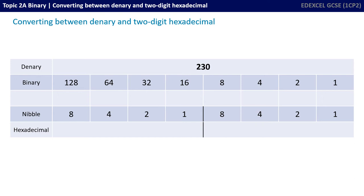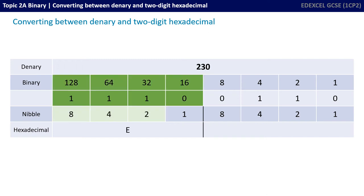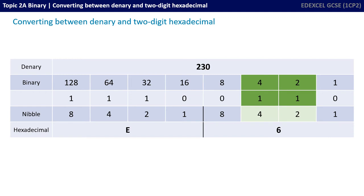Let's look at a larger number now: 230. The process is exactly the same — first, let's write out the binary. We start with the left-hand group of 4 bits, the first nibble. We have a 1 in the 8 column, plus a 1 in the 4 column, plus a 1 in the 2 column, which gives us 14. And of course in hexadecimal, 14 is E. So the left nibble represents E. In the right nibble we have a 4 plus a 2, which is 6 — and in hex that is simply 6. So 230 in denary is E6 in hexadecimal.